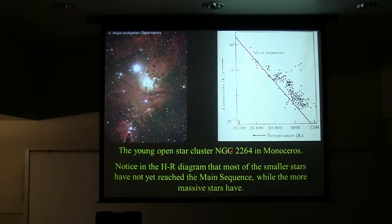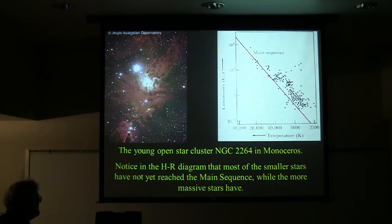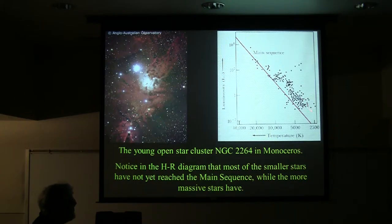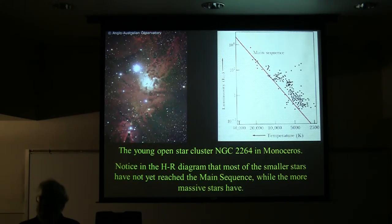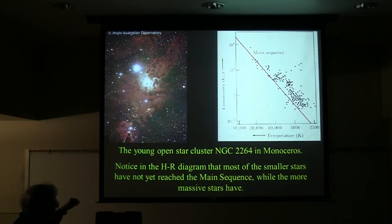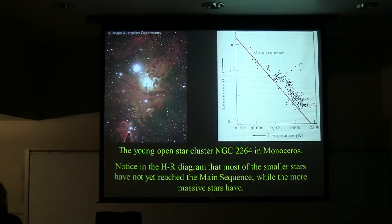Here's a young open star cluster, NGC 2264 in Monoceros the unicorn — a very beautiful cluster visible in the wintertime. If you make an HR diagram just of the stars in this cluster, towards the upper left a lot of stars are on the main sequence, but down near the right where the red dwarfs live, they're not on the main sequence yet. The reason? They haven't gotten there yet. It takes a long time for those little stars to form, so they haven't arrived at the main sequence. The big ones have and are already doing their business.